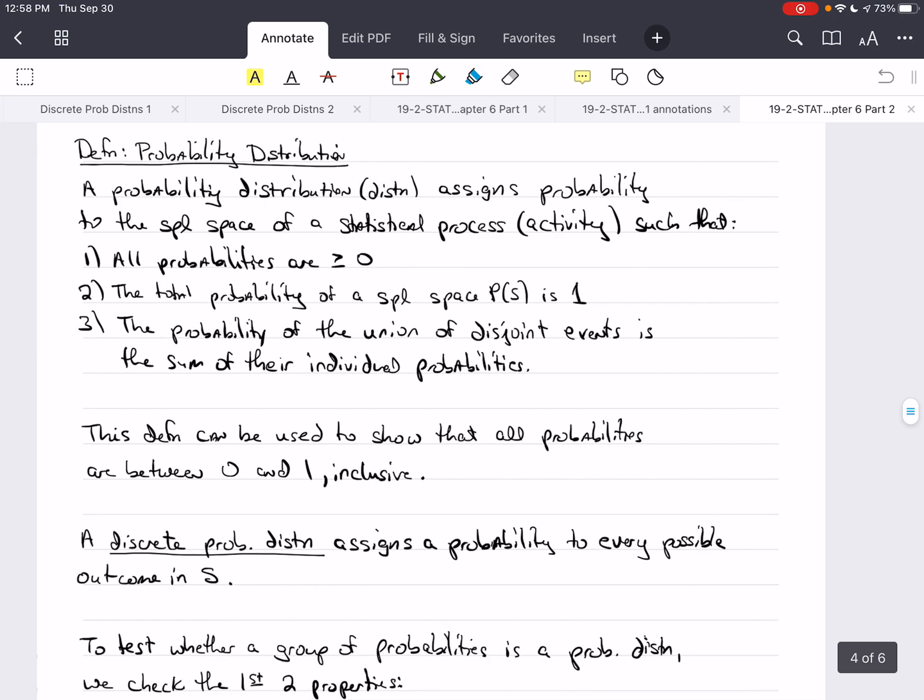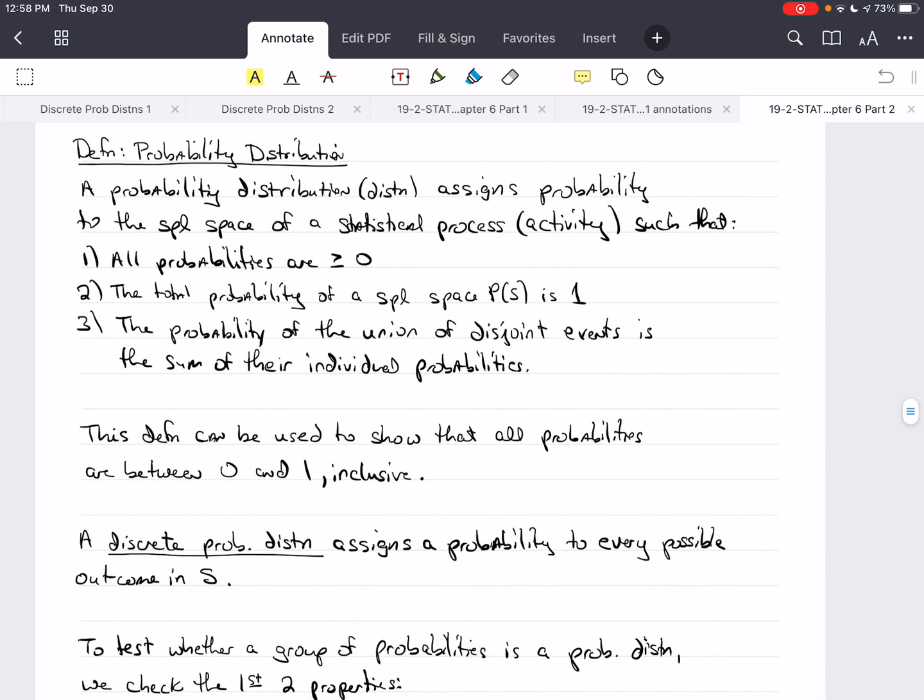Let's define a probability distribution. It assigns a probability to the sample space of a statistical process or activity in such a way that three things are true. First, all the probabilities are greater than or equal to zero. Two, the total probability of the sample space, P(S), is 1. So all the probabilities have to add up to 1. And then, the third property, which we never test but which is true, is that the probability of the union of disjoint events is the sum of their individual probabilities.